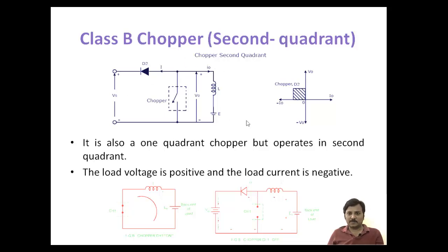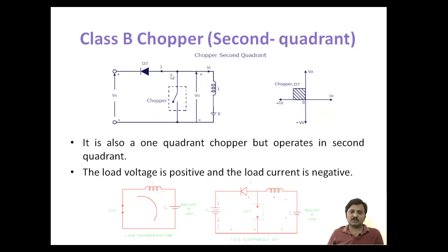The operation of class B chopper is equivalent to step-up operation. The voltage value is positive and the current polarity is negative. So, the voltage polarity is positive but the current direction is reverse — meaning the current flows in the negative direction. It is a one-quadrant chopper but operates in the second quadrant: load voltage is positive and load current is negative.